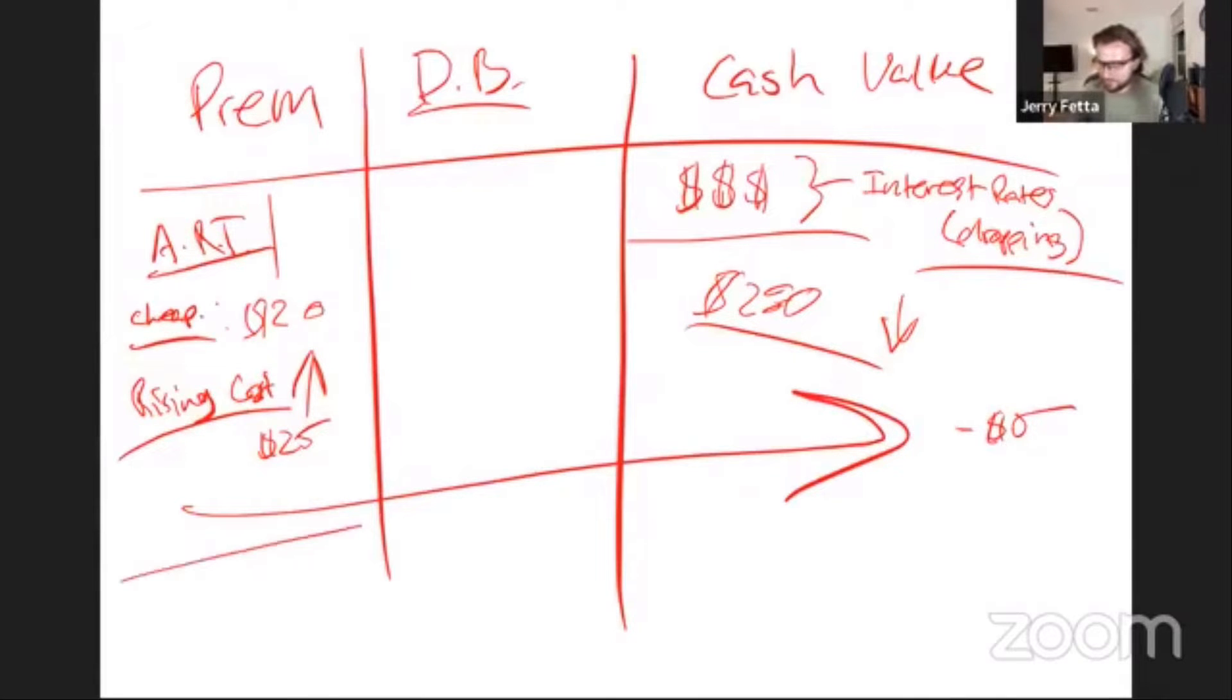What ends up happening is the policy lapses. The increase in premium comes out of the cash value. Eventually it drains the cash value—there's no cash value left—and now grandma has a $4,000 check in the mail saying, 'Hey, you have to pay this new monthly premium or you can't keep your policy.'